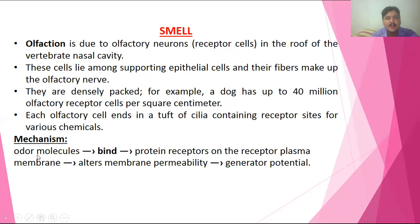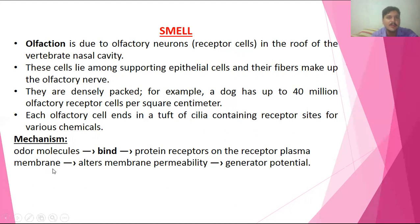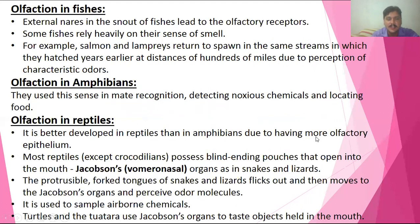The mechanism of olfaction is that when an odour molecule arrives, it binds to protein receptors on the receptor plasma membrane. This activates the receptor, changing the permeability of the plasma membrane, which in turn generates a potential — triggering a nerve impulse.